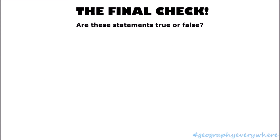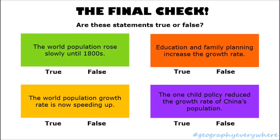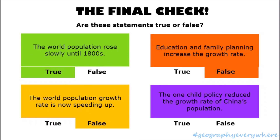The final check — are these statements true or false? The world's population rose slowly until the 1800s: that is true. The world population growth rate is now speeding up: that is false — the world population growth rate has been slowing down for a number of years. Education and family planning increase the growth rate: also false — education and family planning usually decrease the growth rate because they lead to a reduction in family size and lower the fertility rate, which is the number of children a woman will bear. The one-child policy reduced the growth rate of China's population: this is true.